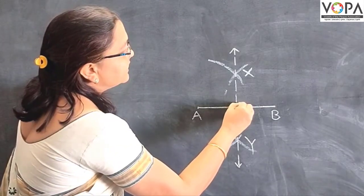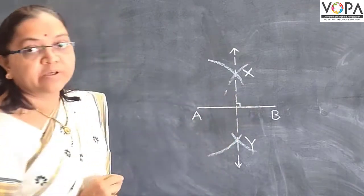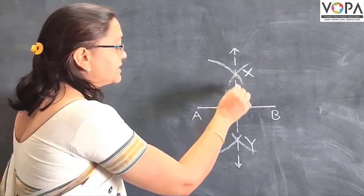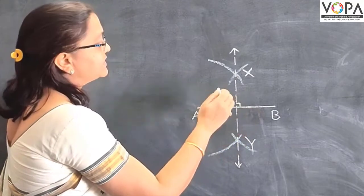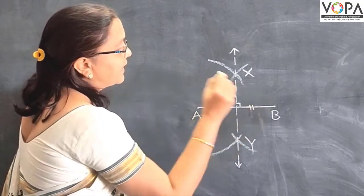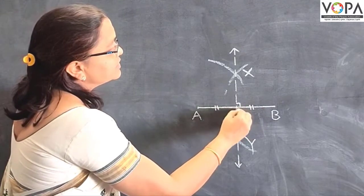Here, this line XY is perpendicular to this segment AB. And this line XY divides this segment AB in two equal parts. Suppose this is point P.